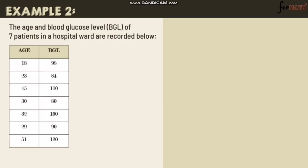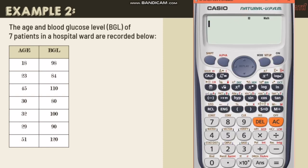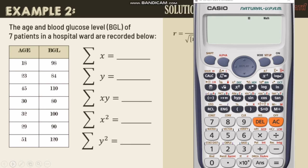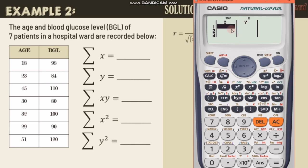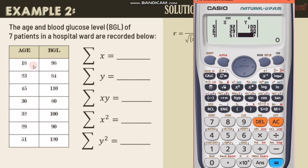To compute the summations using the calculator in STAT mode (Mode 3, A+BX, option 2): input the X values — 18, 23, 45, 30, 32, 29, 51 — and Y values — 98, 84, 110, 80, 100, 90, 120. After pressing AC, use Shift 1 → Sum (3) to get: summation of X = 228, summation of Y = 682, summation of XY = 22,976, summation of X-squared = 8,244, summation of Y-squared = 67,660.